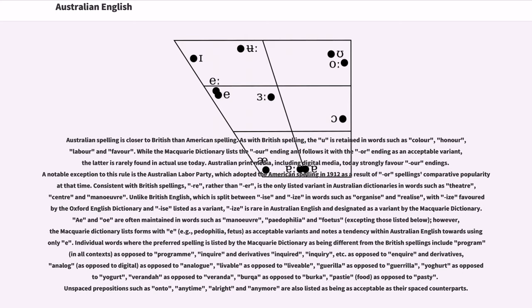Consistent with British spellings, -re, rather than -er, is the only listed variant in Australian dictionaries in words such as theatre, centre and manoeuvre. Unlike British English, which is split between -ise and -ize in words such as organise and realise, with -ize favored by the Oxford English Dictionary and -ise listed as a variant, -ize is rare in Australian English and designated as a variant by the Macquarie Dictionary.